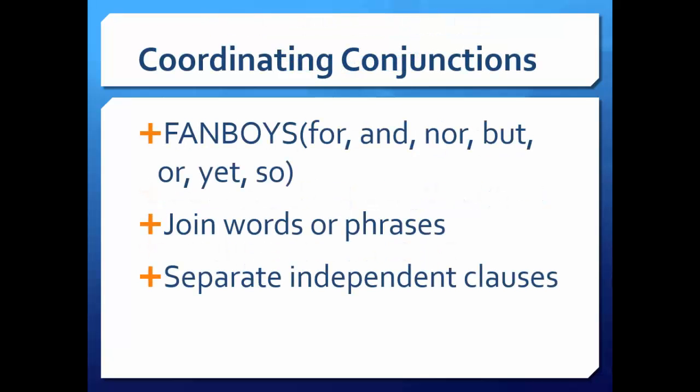Conjunctions are parts of speech that join words, phrases, sentences, or clauses. Coordinating conjunctions include for, and, but, or, yet, and so. Typically, these are the only conjunctions that should separate two independent clauses.